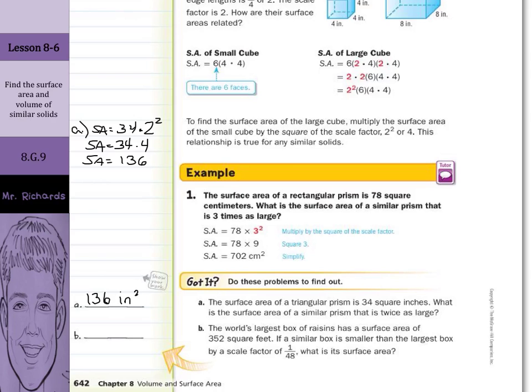What about B? This world's largest box of raisins has a surface area of 352 square feet. If a similar box is smaller than the largest box by a scale factor of 1/48th, what is the surface area? Well, this time, for example B, surface area is going to equal the original 352 and we're going to multiply that by the scale factor of 1/48th. We're still going to square it.